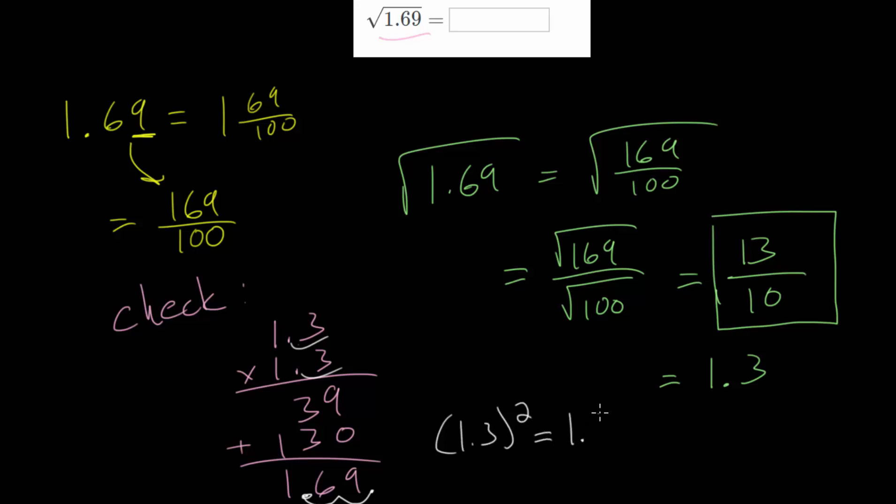So it is true that the square root of 1.69, or the number when multiplied by itself that gives you this 1.69, is 1.3, or 13 tenths.